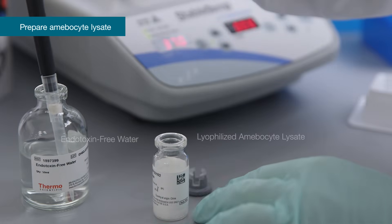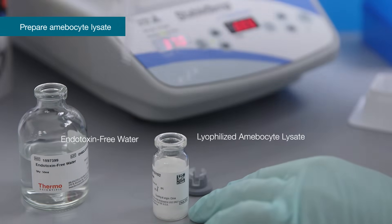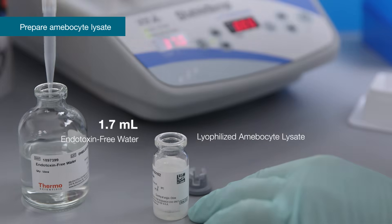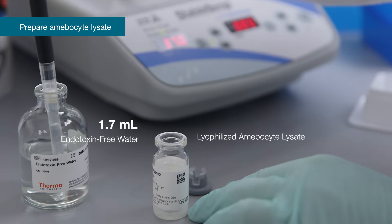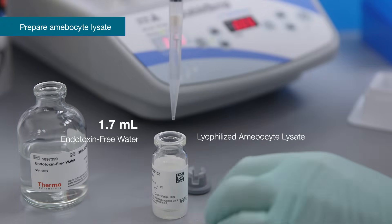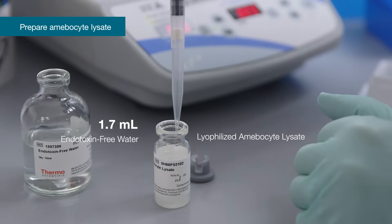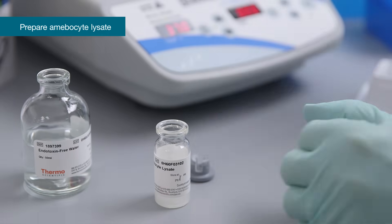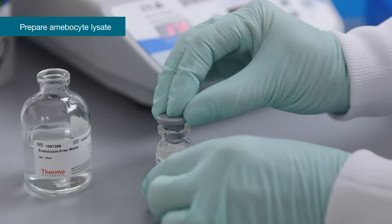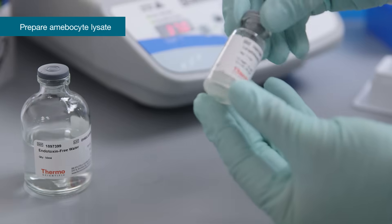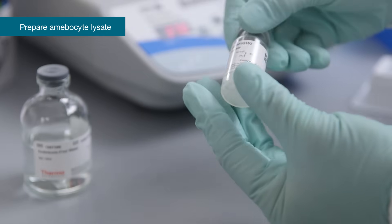Reconstitute lyophilized amebocyte lysate immediately before use with 1.7 ml of endotoxin-free water and swirl gently to dissolve the powder. Do not vortex. Gently invert end over end to recover all of the powder from the sides and the cap of the vial. If more than one vial is required, pool two or more vials before use.